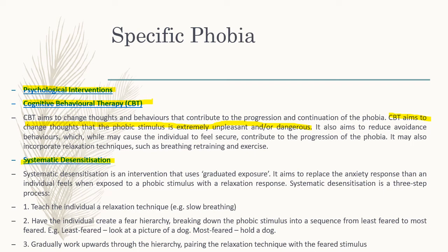Systematic desensitisation is the most commonly used intervention to treat phobias, and it uses graduated exposure. It is a psychological intervention that replaces the anxiety response with a relaxation response. Systematic desensitisation is a three-step process, and you must always mention the three steps if asked about it: first, teach the individual a relaxation technique; second, have the individual create a fear hierarchy, breaking down the phobic stimulus into a sequence from least feared to most feared; and third, gradually work upwards through the hierarchy, pairing the relaxation technique with the feared stimulus.